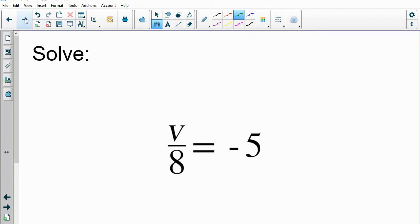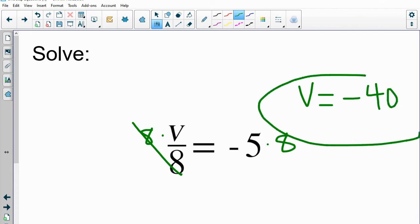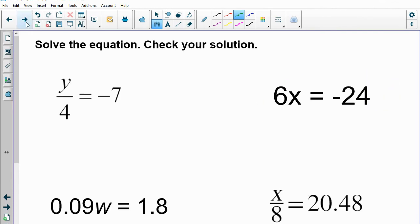Okay, here's another one where we're dividing both sides by 8. To undo dividing by 8, we multiply by 8. All right, so those 8s cancel each other out on the left side, and that will just leave us with v equals whatever we get on the right side. -5 times 8 is -40.